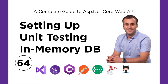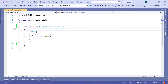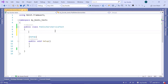Now that we have set up the development environment, we are going to set up the unit testing in-memory database. So for that, let us go to Visual Studio. In here, go to the publisher's service test file, and just before the setup method, we are going to write some code.